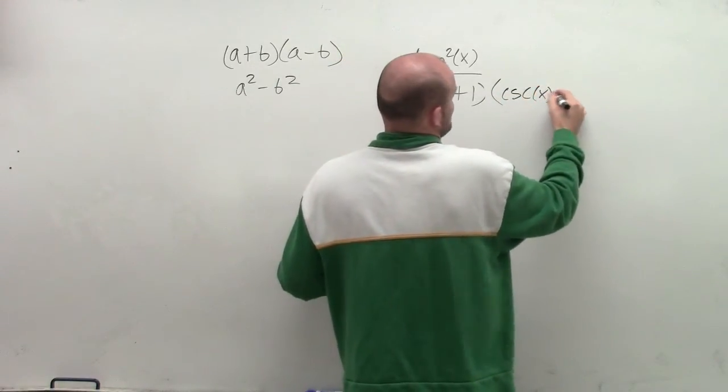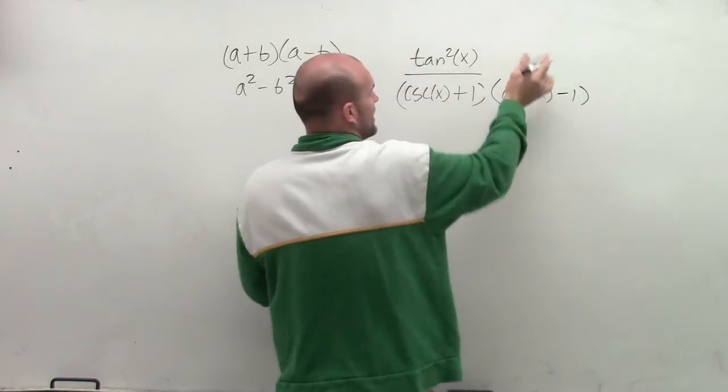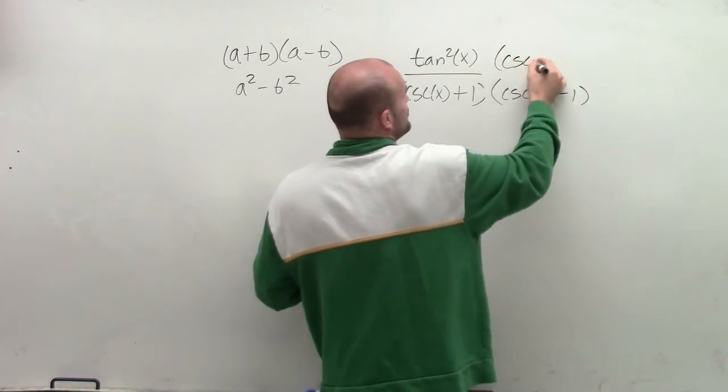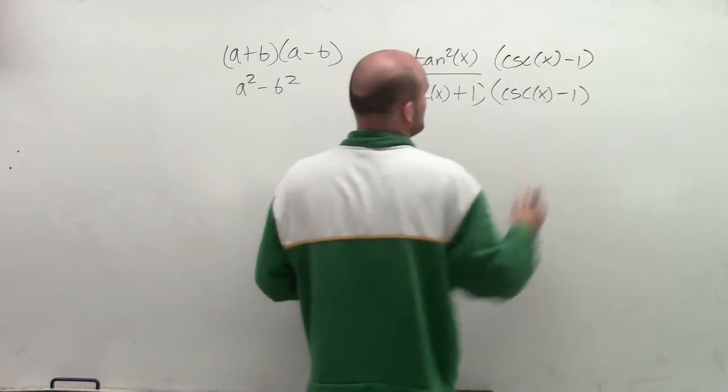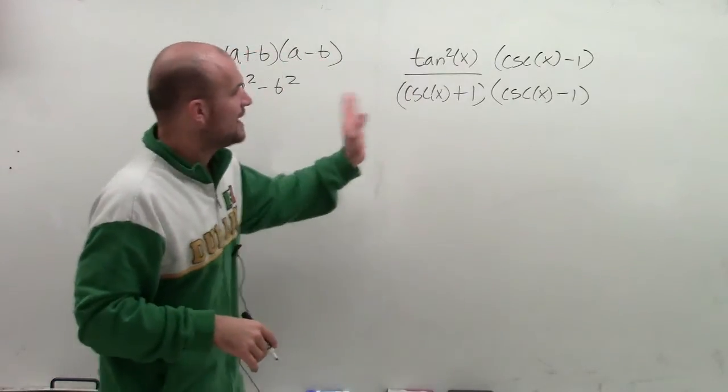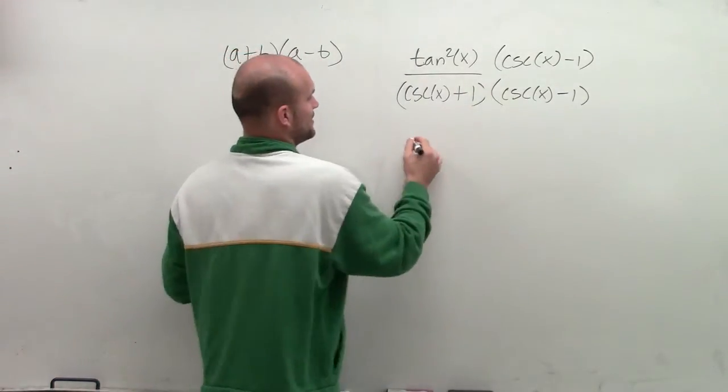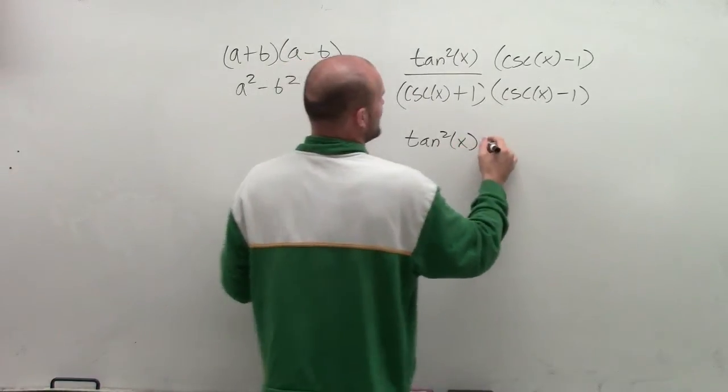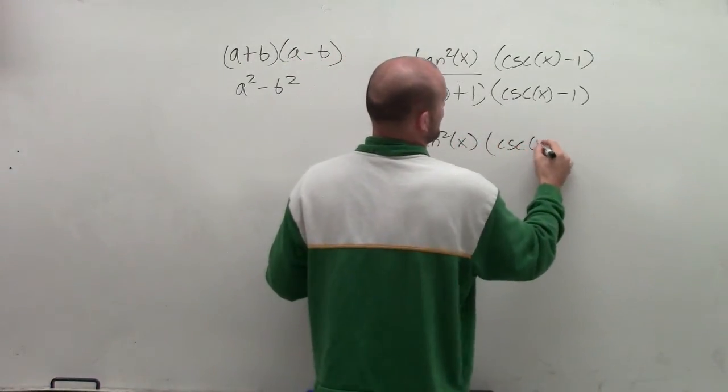I have cosecant of x minus 1. I need to make sure that I multiply my conjugate on the denominator and on the numerator to produce equivalent fractions. Now I'm going to keep my denominator the same. I'm not going to multiply that through.